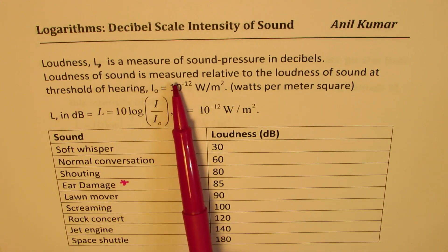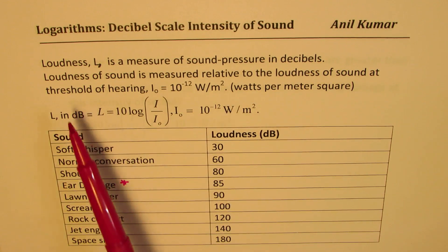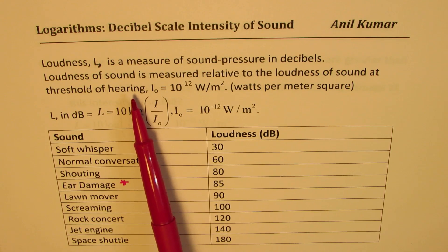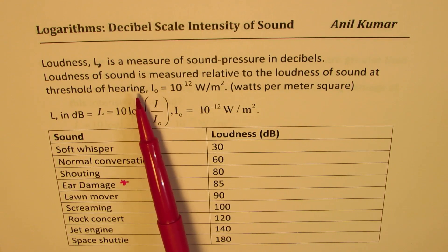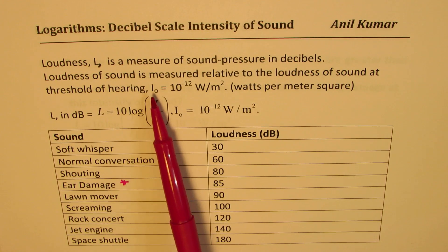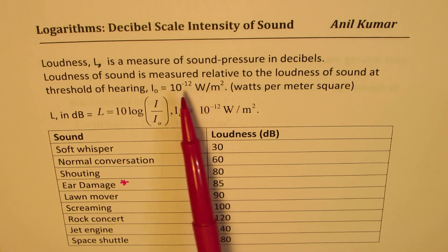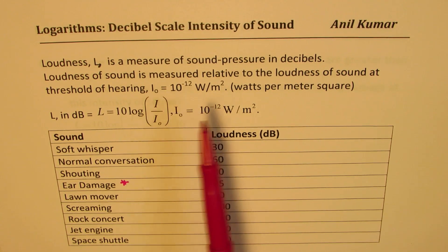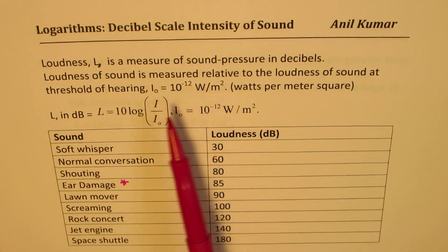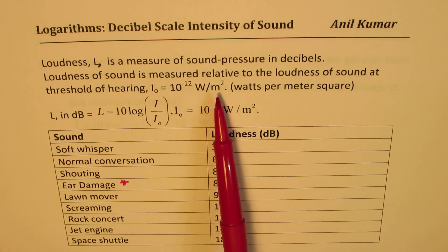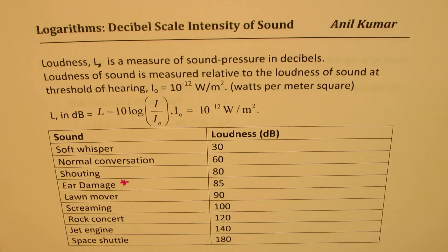Loudness of sound is measured relative to the loudness of sound at the threshold of hearing. The minimum sound which you can hear — all loudness is being compared with that intensity. The intensity of the minimum sound you can hear is 10 to the power of minus 12 watts per meter square. So intensity is always given in watts per meter square, while loudness will be in decibels. This should help you solve word problems.